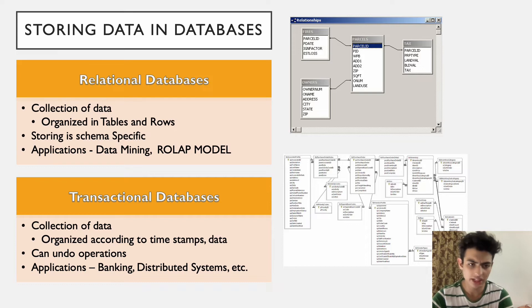The next one is transactional databases. So transactional databases are optimized for running production systems, everything from websites to banks to retail stores. These databases excel at reading and writing individual rows of data very quickly while maintaining data integrity. They are organized according to timestamps. They have another unique feature, which is we can undo operations within such databases.